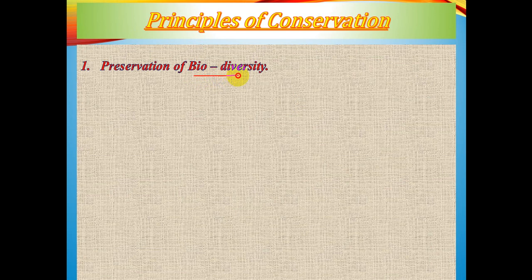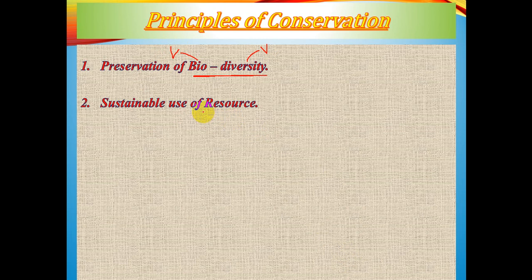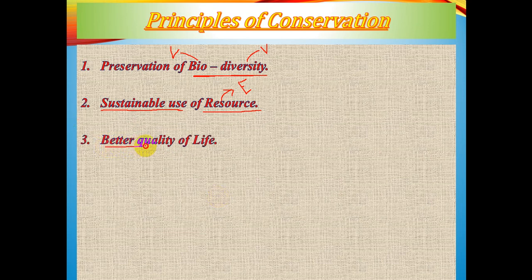The first principle of conservation is to preserve biodiversity — 'bio' means life, 'diversity' means variety, and variety of life depends on forests. The second principle is sustainable use of resources: forests provide huge resources, but if they deplete at a large scale, resources will be exhausted and future generations will be deprived of them. The third principle is better quality of life.